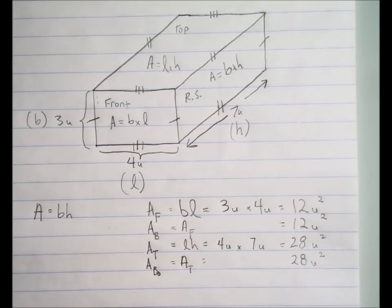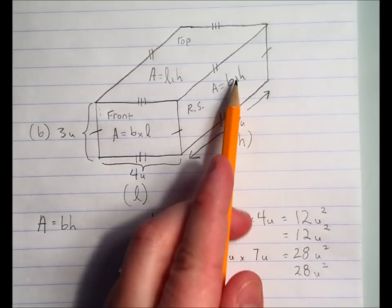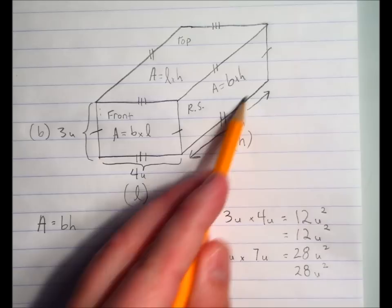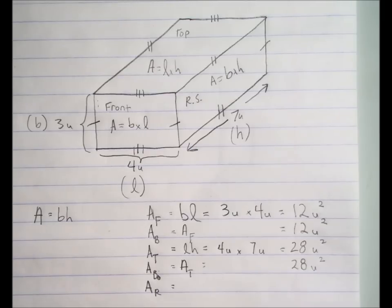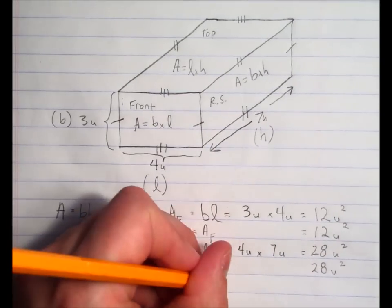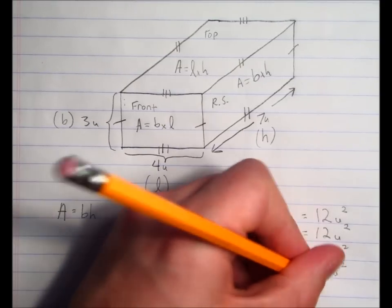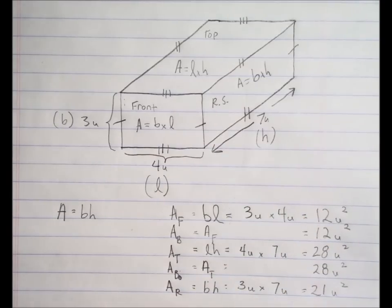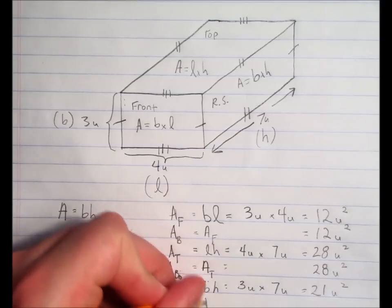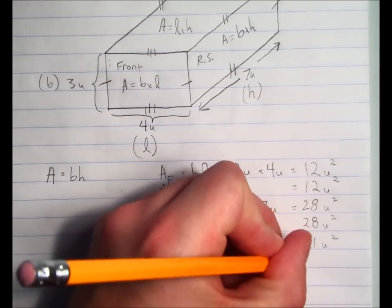Since there are six rectangles making up the rectangular prism and we've taken care of four of them, there are only two left: the right side and the left side. The area of the right side equals base times height — three units times seven units — which equals twenty-one square units. The area of the left side is the same as the area of the right side, also twenty-one square units.